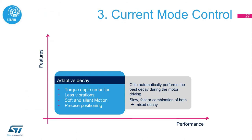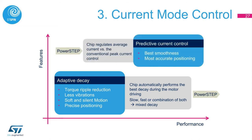Let's now present how the digital motion engine introduces innovative driving techniques in the traditional current mode control as well. We will describe first the adaptive decay, and second, the predictive current control, and how these advanced control techniques allow low ripple and vibration reduction, silent motion, superior smoothness, and more precise positioning. This is made possible by ST's digital motion engine. Predictive current control and adaptive decay are ST patents.